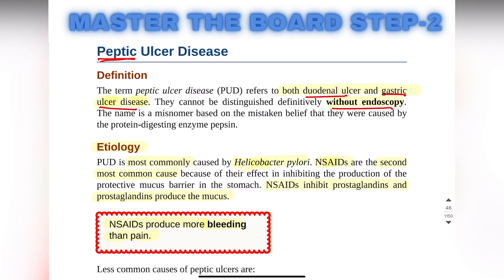NSAIDs cause peptic ulcer disease by inhibiting prostaglandins that produce mucus. That mucus forms a protective barrier on the stomach, so when prostaglandins are inhibited by NSAIDs, there won't be any protective layer on the stomach and peptic ulcer disease will occur. A high-yield point to remember is that NSAIDs produce more bleeding than pain.